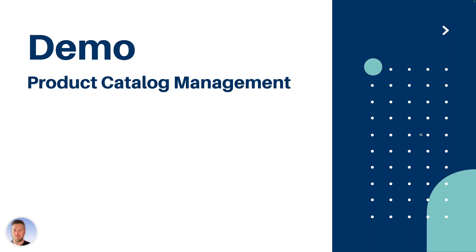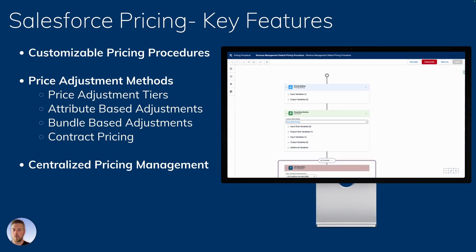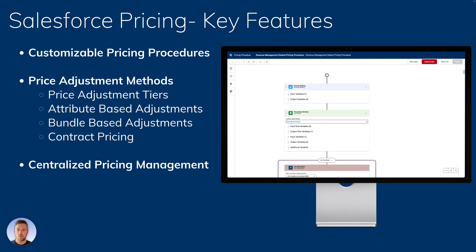That was product catalog management. Now let's look at Salesforce Pricing. The key features include customizable pricing procedures — your pricing procedure is the price waterfall, and you have total control over how it's built, how it calculates, and the order of operations. It also offers price adjustment tiers for volume tier-based pricing and attribute-based adjustments. Attributes you build in product catalog management can drive pricing either up or down.